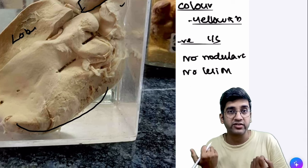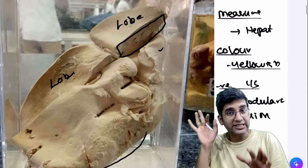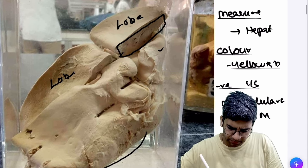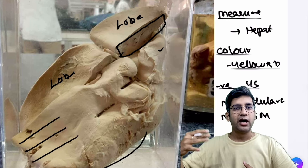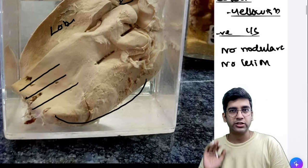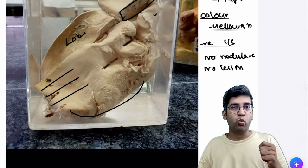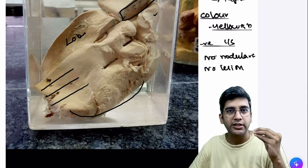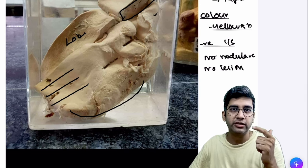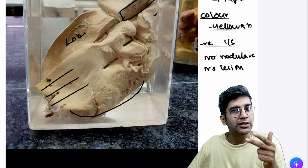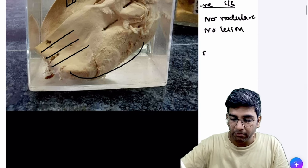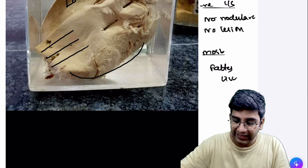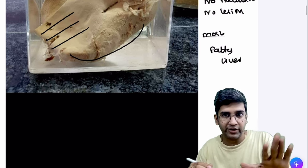There is a possibility of cirrhosis coexisting, so noting its absence is important. Whatever cut surface I can see here looks normal, but I would add that multiple serial cut sections would be needed to fully assess the architecture of the rest of the liver, which is not visible here. So to summarize for the examiner: this is a liver specimen that is grossly enlarged, yellow in color, with no lesions on the cut surface — most probable diagnosis is fatty liver.